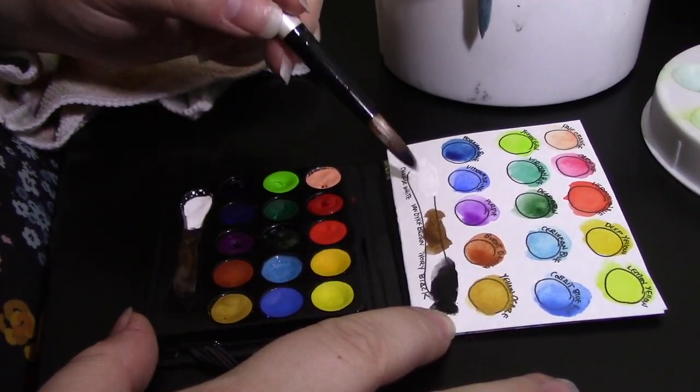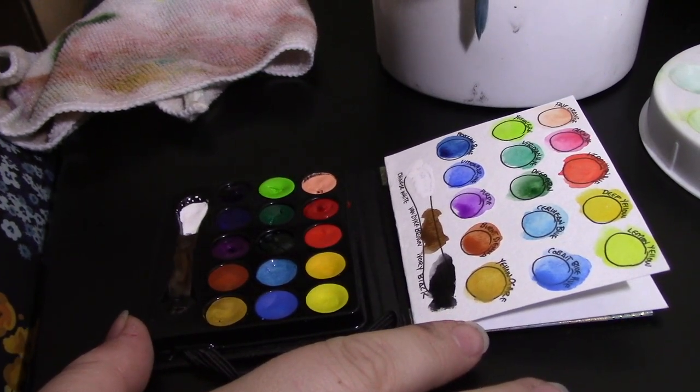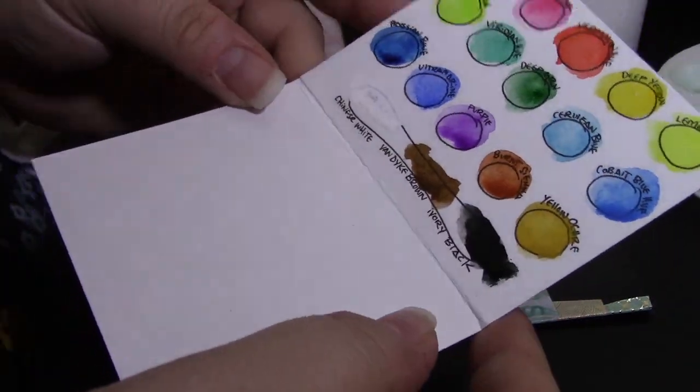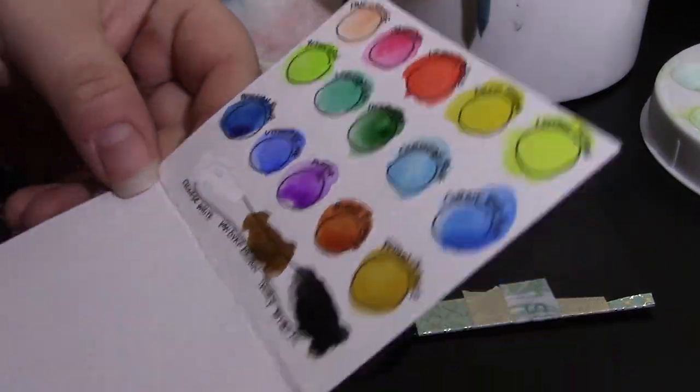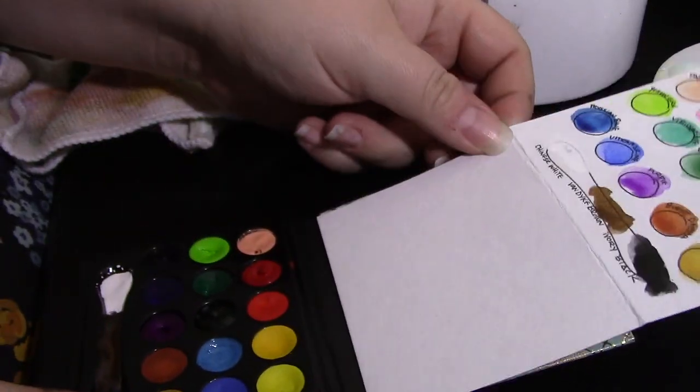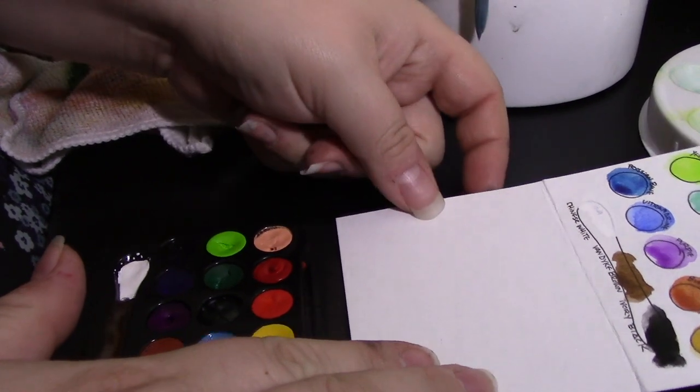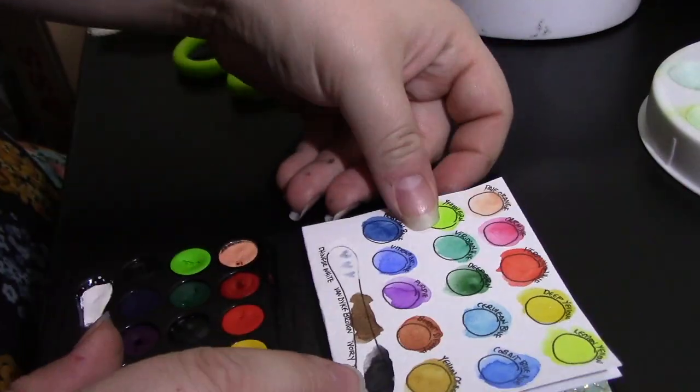You know that old adage of measure twice, cut once? At this point double, triple, even quadruple check that your card will fit properly inside of your palette, even while folded. It's also a good idea to make sure that it's smaller than you expect to need, because the next step will inherently make it larger.